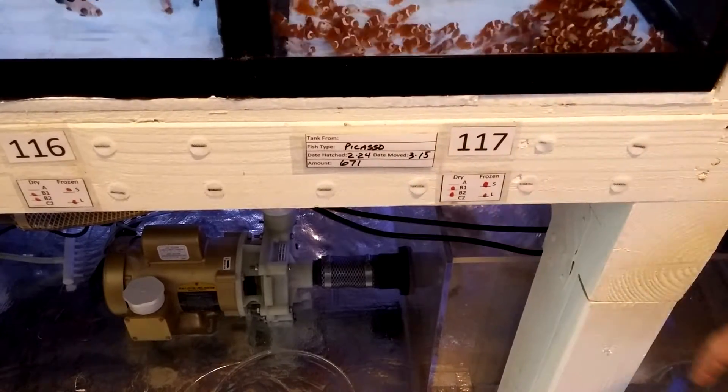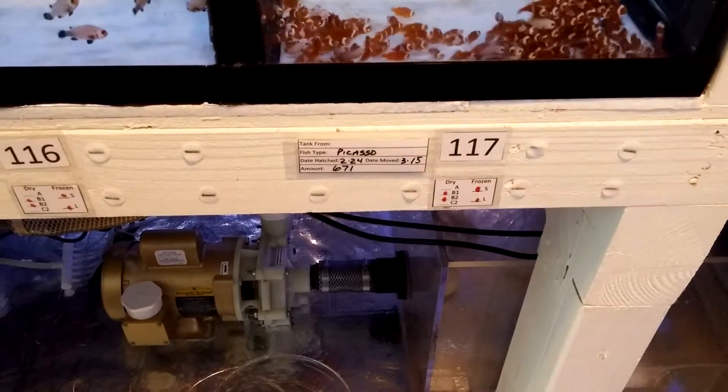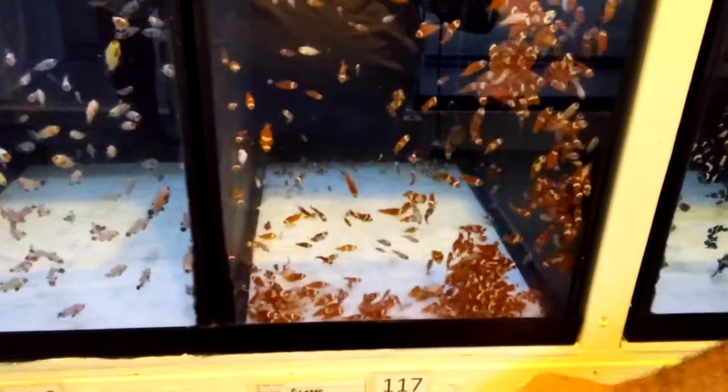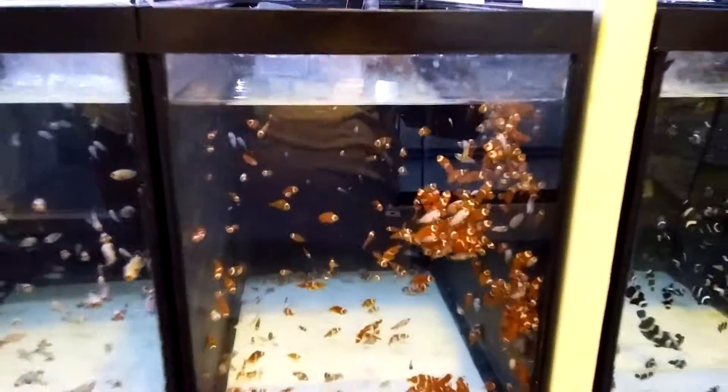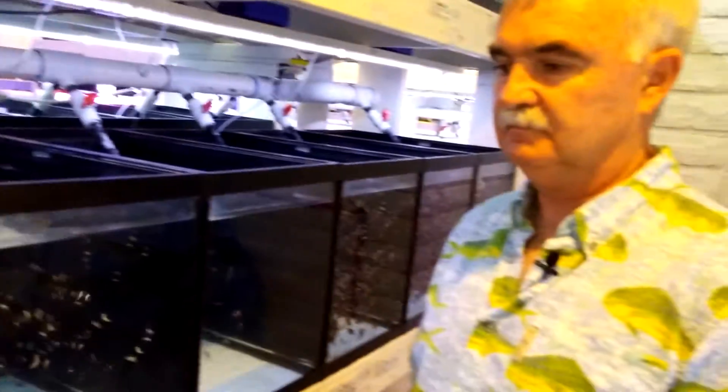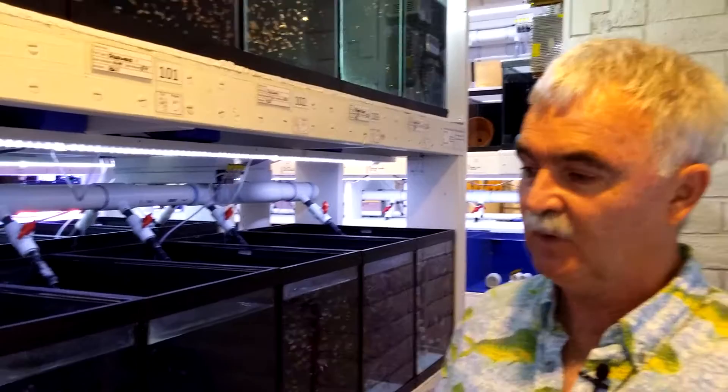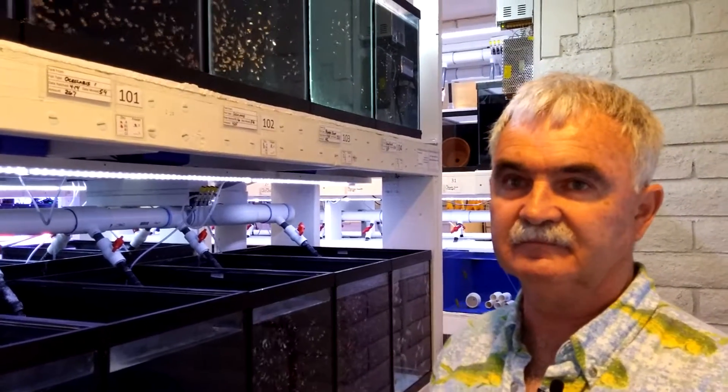On this particular batch of Picassos, there was 671 fish. Then we also have tags over here, what they eat, what food group that they're... So, number like 671, that's pretty precise. That's a good amount of fish here. We count all the fish before we move them into the system.